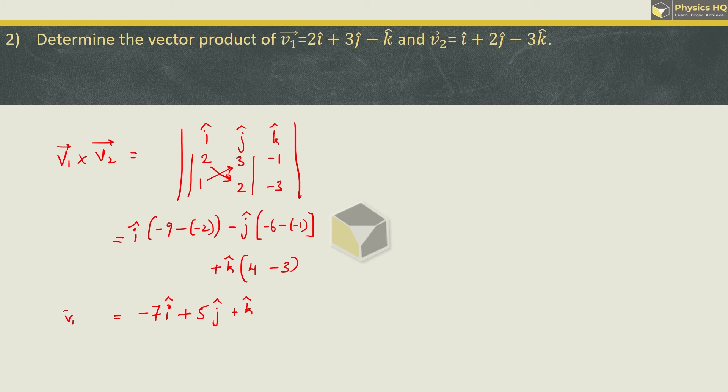So we got v1 cross v2 equal to minus 7i plus 5j plus k. Hope you all understood this.